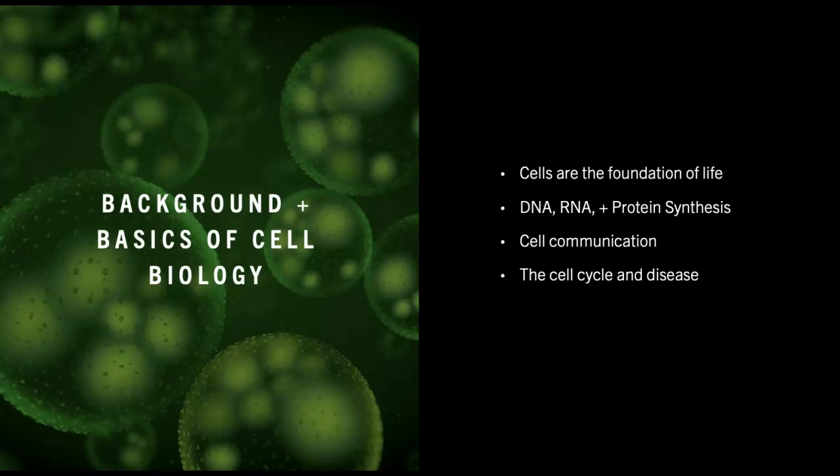Cell communication is achieved through signaling pathways which trigger specific cellular responses, such as growth, division, or activation of immune responses. Finally, cells follow a regulated cycle of growth, DNA replication and division. When this cycle is disrupted it can lead to diseases such as cancer where cells divide uncontrollably. Understanding these processes is key to studying how disease progresses.